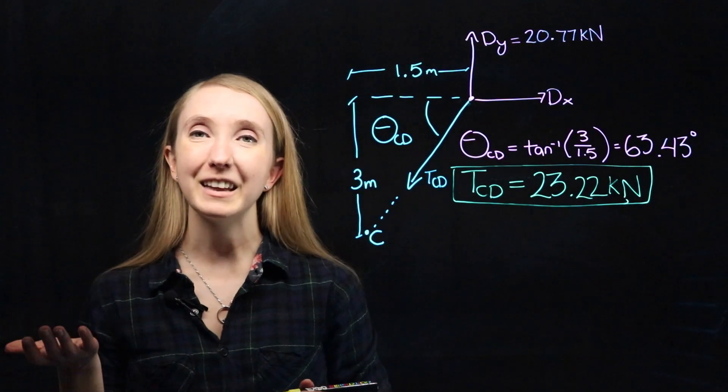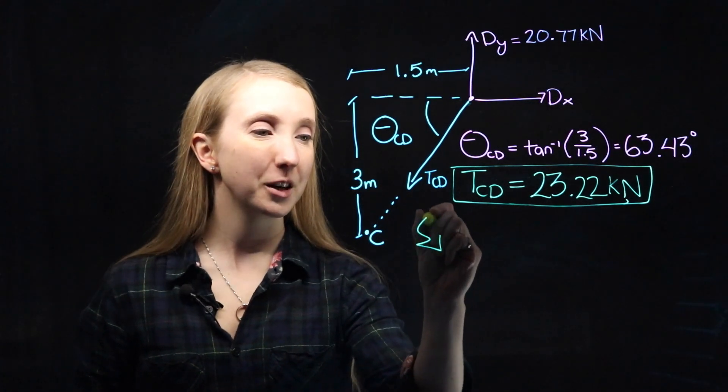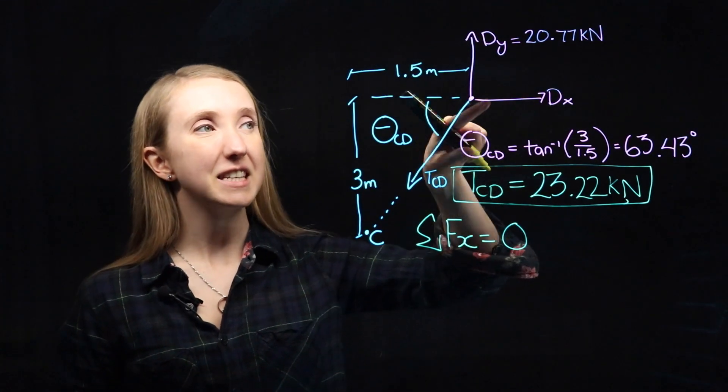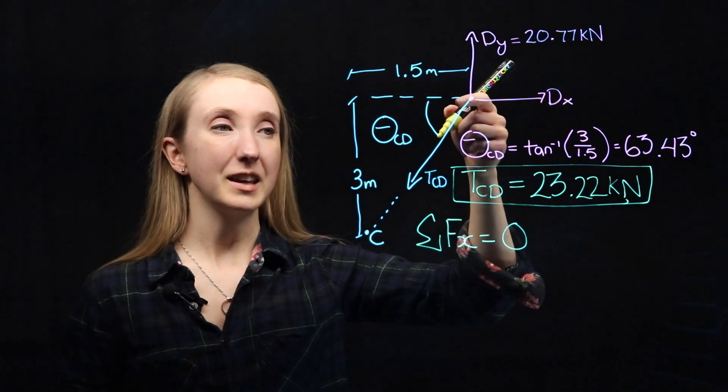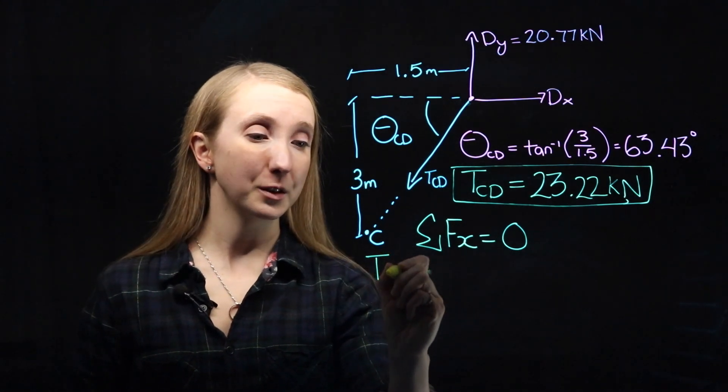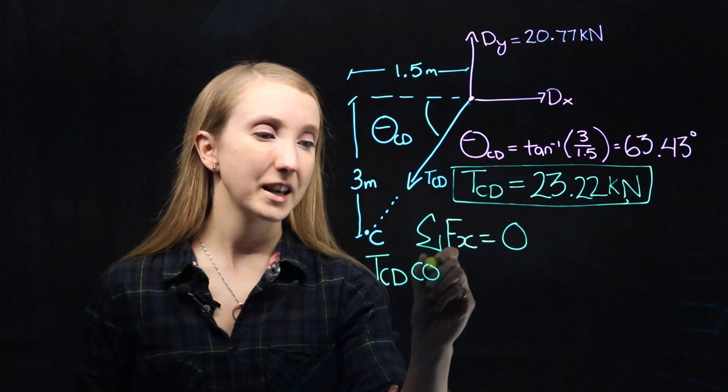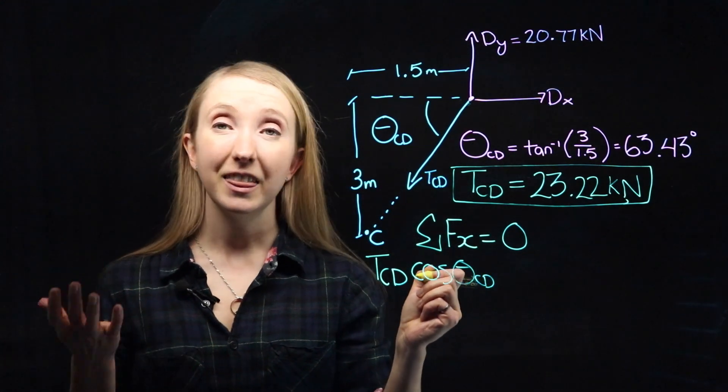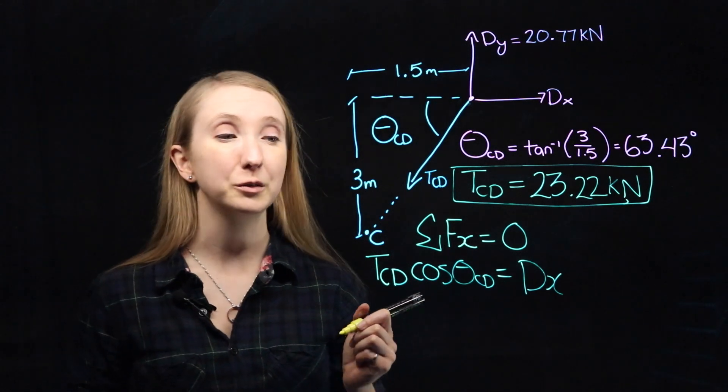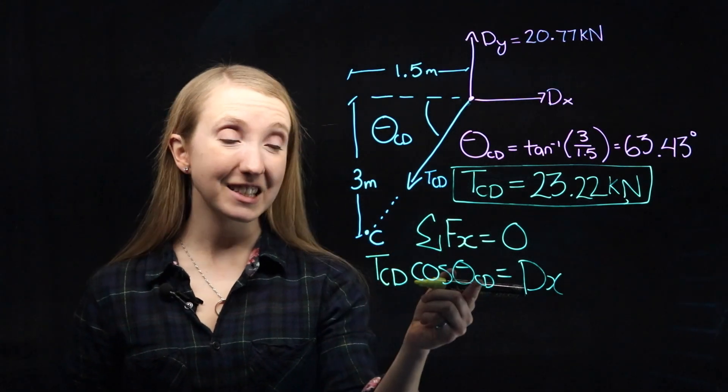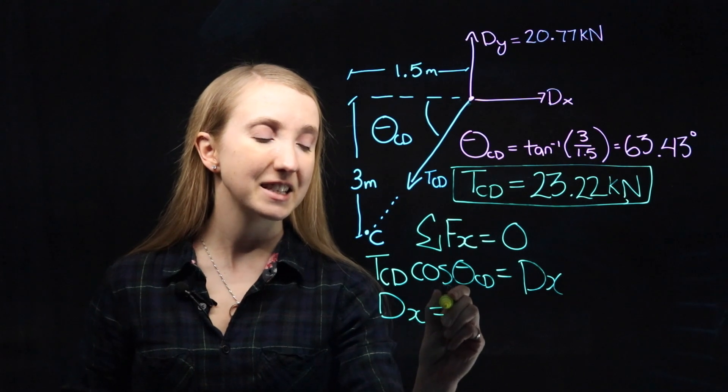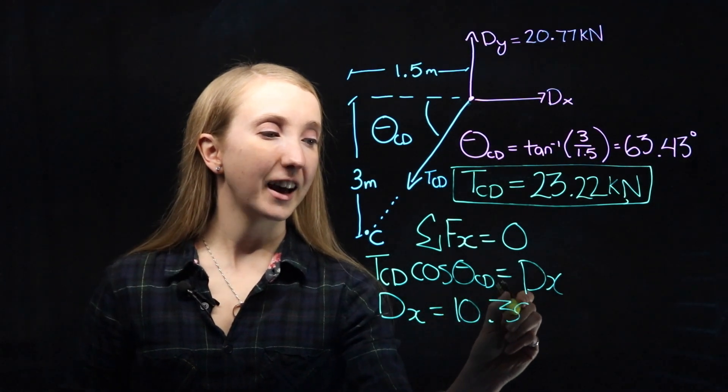Now let's look at our equilibrium in the x direction. So the sum of the forces in the x direction has to be equal to zero. That means that dx is going to be equal to the x component of TCD. And from geometry, we know that that would be equal to TCD times the cosine of our theta CD. Then we can equate that to dx. And since we've already solved for TCD and theta CD, we can find our dx. So when you plug in your values, you get that dx is equal to 10.39 kilonewtons.